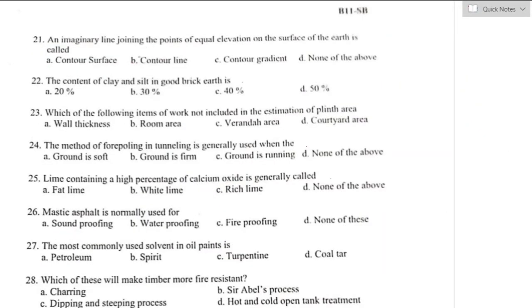Question number twenty-one: an imaginary line joining points of equal elevation on the surface of the earth is called a contour line. Option B is the right answer. Question number twenty-two: the content of clay and silt in good brick earth should be limited to 20%. Option A is the right answer.